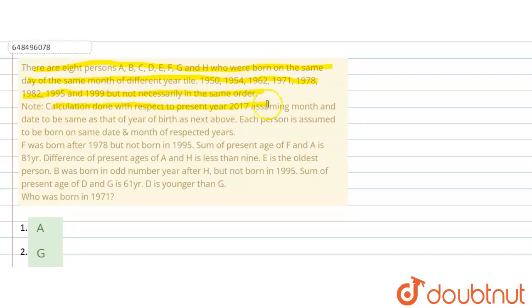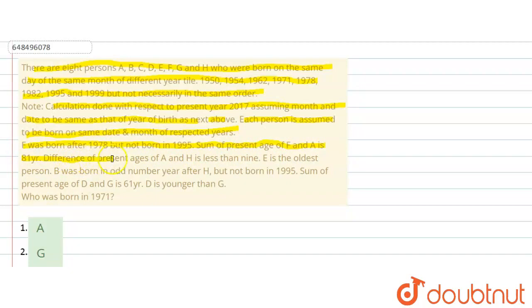Calculations are done with respect to the present year 2017, assuming month and date to be the same. Each person is assumed to be born on the same date and month of the respective year. Clues: F was born after 1978 but not in 1995. Sum of the present ages of F and A is 81 years. Difference of present ages of A and H is less than 9. E is the oldest person. B was born in an odd-numbered year after H, but not in 1995.